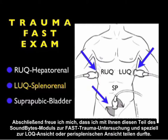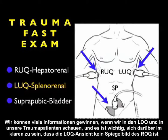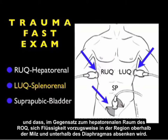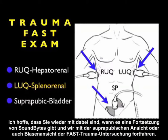In conclusion, I'm glad I could share this Soundbytes module going over the trauma FAST exam, specifically the left upper quadrant or perisplenic view. There's a great deal of information we can gain by looking into the left upper quadrant in our trauma patients, and it's important to realize that it is not a mirror view of the right upper quadrant — fluid will preferentially layer out above the spleen and below the diaphragm, in contrast to the hepatorenal space on the right. I hope to see you back as Soundbytes continues and we move on to the suprapubic or bladder view of the trauma FAST exam.